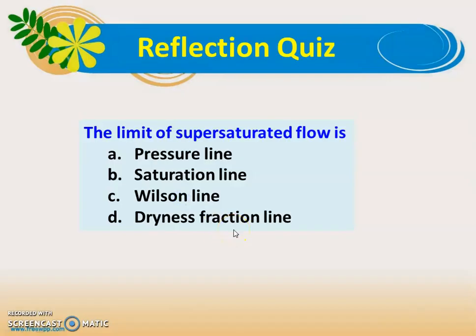Now, some quiz questions to recall the concept. Question: What is the limit of supersaturated flow? Options are: pressure line, saturation line, Wilson line, or dryness fraction line. The correct answer is the Wilson line — the Wilson line is the limit for the supersaturated flow. Below the Wilson line it becomes wet steam; between the saturation line and the Wilson line, the flow continues as dry saturated steam. Second question: In the region of supersaturated flow, the steam is considered as — dry saturated steam, wet steam, superheated steam, or supersaturated steam? The correct answer is dry saturated steam.